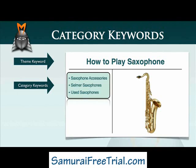Just to recap, in this video we've looked at the process of using our theme keyword to find related category keywords that also meet our main SEO criteria. We'd suggest that you have at least three or four category keywords before you select a micro niche to work with.